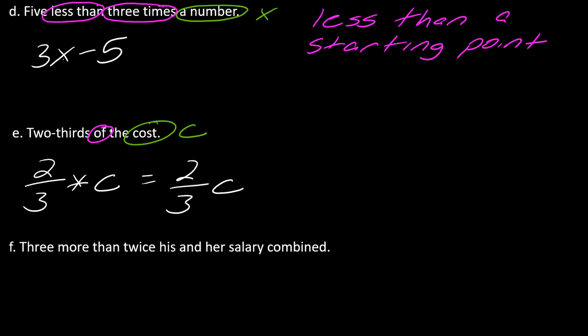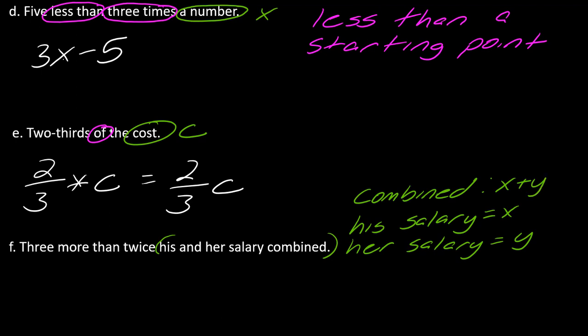All right, last one. Three more than twice his and her salary combined. All right, this one's a little tricky. For this one, we have his and her salary combined. So now we're talking about two different salaries. So his salary, what letter do we want to use for that? Let's use X here. And then what do we use for her salary? Let's use Y. So in this case, this is going to be a little bit different. How do I combine the two salaries? Combined indicates the idea of addition. So three more than twice that. I need to take twice the entirety of this combination. So twice is indicating multiplication. And then we also have this more than indicating addition. So those are all my math words here.